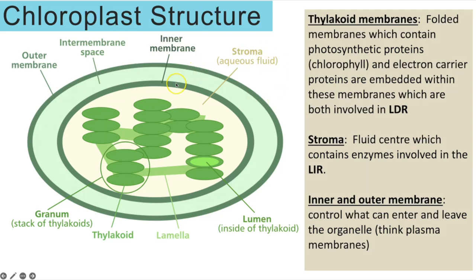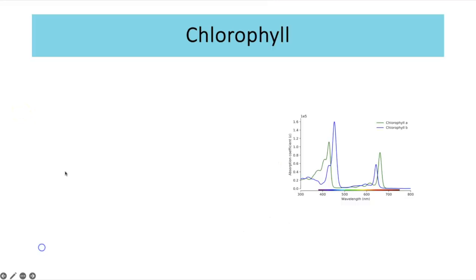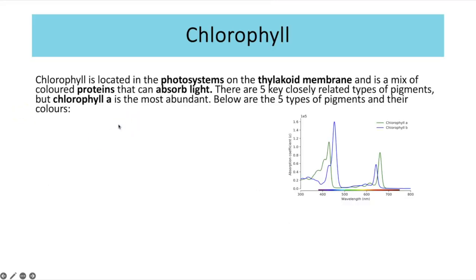We also have the inner and outer membrane — this is a double membrane-bound organelle, so you don't find chloroplasts in prokaryotic cells because it is membrane-bound. Inside the chloroplast there is chlorophyll, and chlorophyll is located in the photosystems which are proteins embedded on the thylakoid membrane.